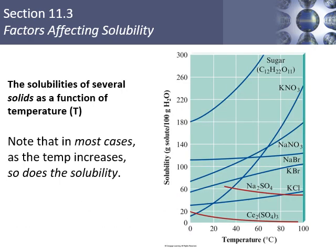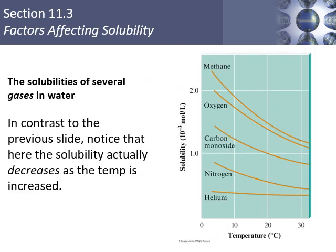Looking at graphs: for sugar dissolved in water, solubility increases as temperature increases across the x-axis — that's the case for most solids and liquids, with a couple of exceptions. For gases, solubility decreases as temperature increases — including carbon dioxide — which is why they lower the temperature when making carbonated beverages to allow more CO₂ to dissolve.